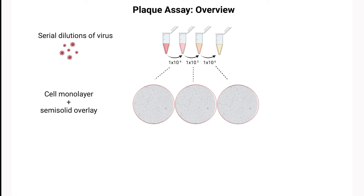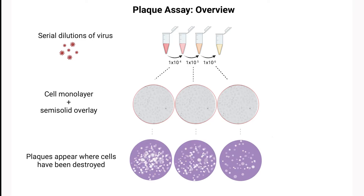By applying a semi-solid overlay, we limit the spread of the virus to neighboring cells. This containment causes each infectious particle to produce a localized zone of infected cells called a plaque.